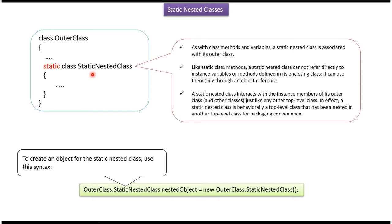Like a static method, a static nested class cannot access instance variables and instance methods of the outer class. If the static nested class wants to access instance variables and instance methods of the outer class, it has to use an object reference.